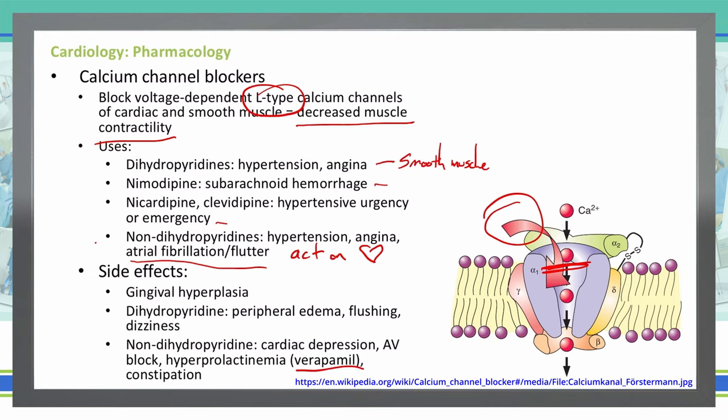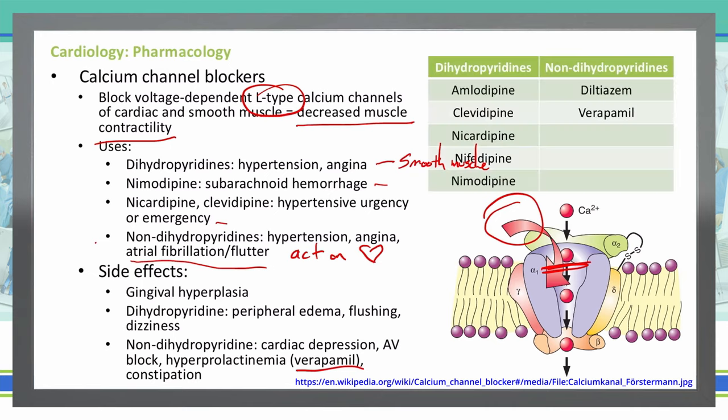Examples of dihydropyridines include amlodipine, clevidipine, nicardipine, nifedipine, and nimodipine. Our non-dihydropyridines are diltiazem and verapamil.